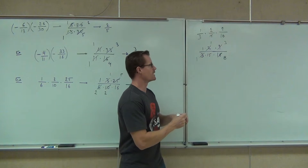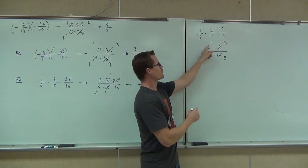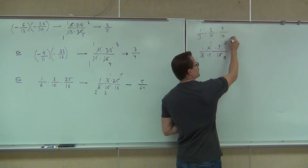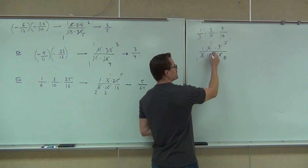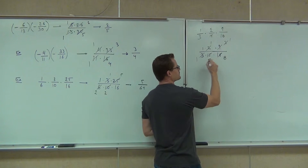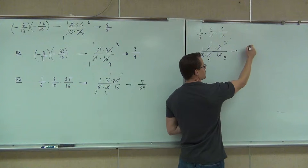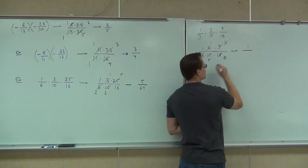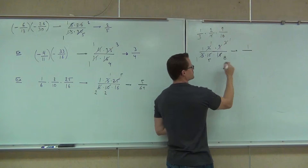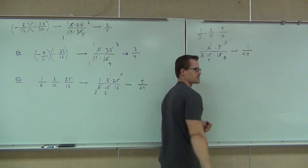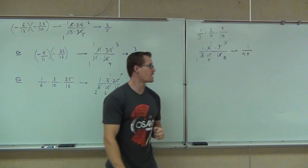We'll find out. Here we have 1, 1, and 3. 3 goes into 3 one time. 3 goes into 15 five times. 1 times 1 times 1 is, in fact, 1. 1 times 5 times 8 is 40. That's your final answer, 1/40th.